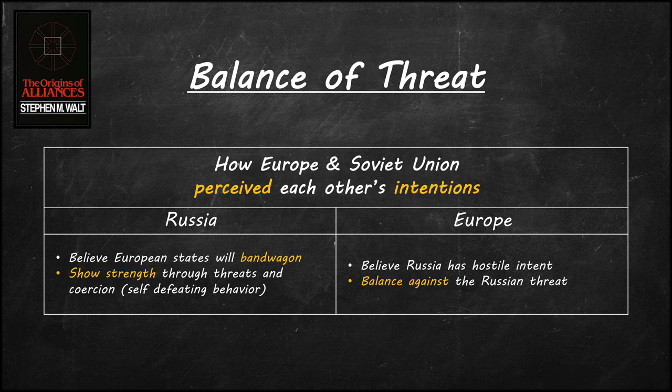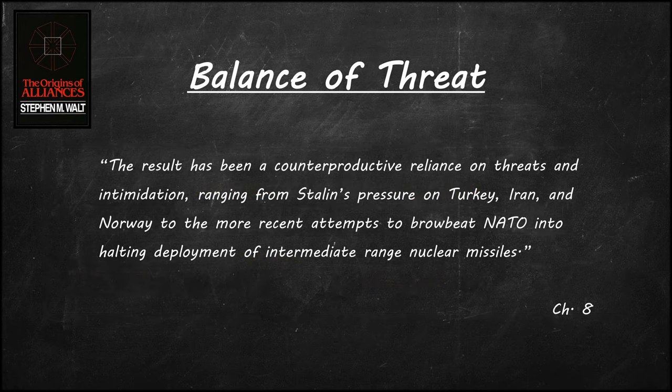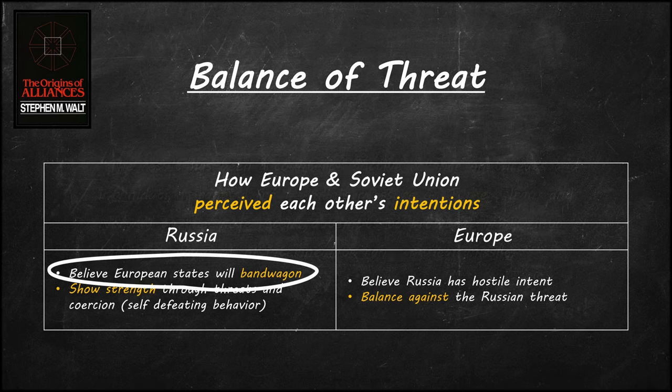Walt's final analysis of the Soviet Union is revealing. Walt claims that one of the reasons for European hostility towards the Soviet Union is found in how they perceive each other's intentions. The Soviet Union was supposedly expecting the European states to be prone to bandwagoning. This expectation led the Soviet Union to make threatening or coercive behaviors. Weaker states bandwagon with the stronger state, so the Soviets wanted to prove how strong they were. The result was a counterproductive reliance on threats and intimidation, ranging from Stalin's pressure on Turkey, Iran, and Norway, to more recent attempts to browbeat NATO into halting deployment of intermediate-range nuclear missiles. Walt snuck in a little bit of idealism here — that the Soviet Union expected European states to bandwagon is neither about power nor threats, but about ideals and beliefs of how states would or should behave.